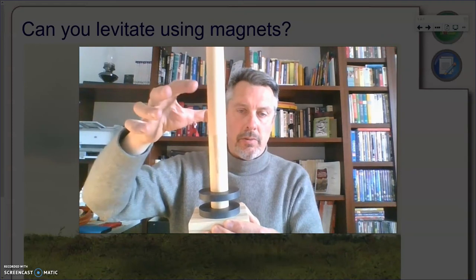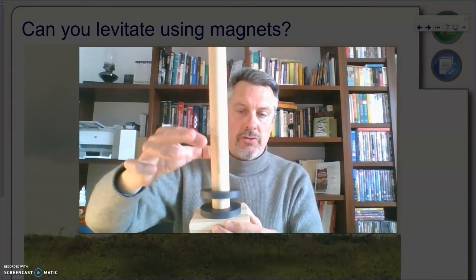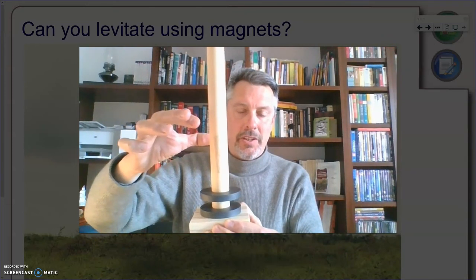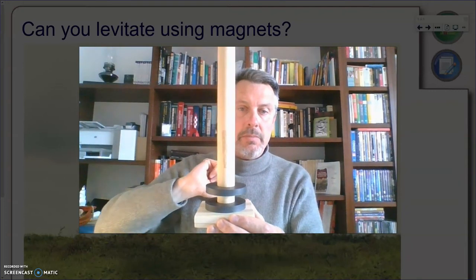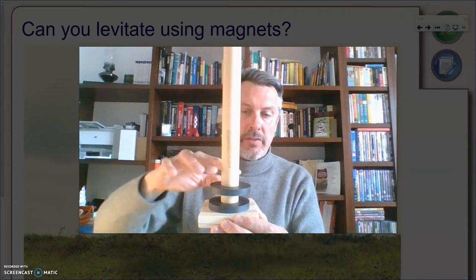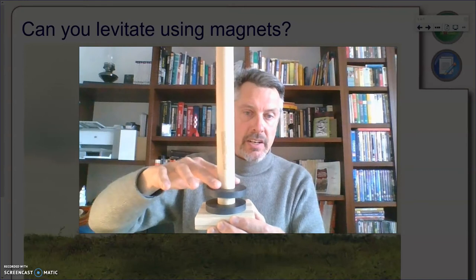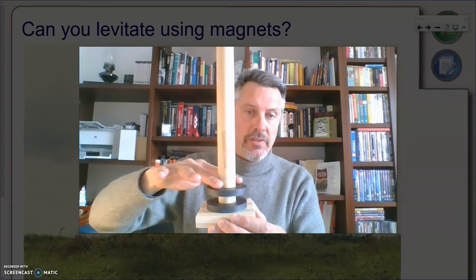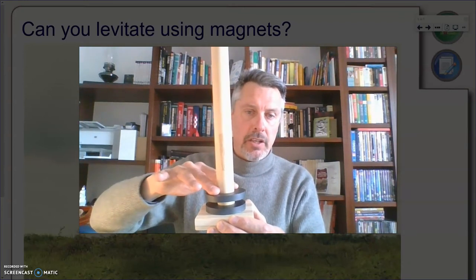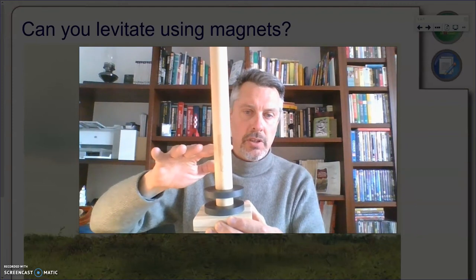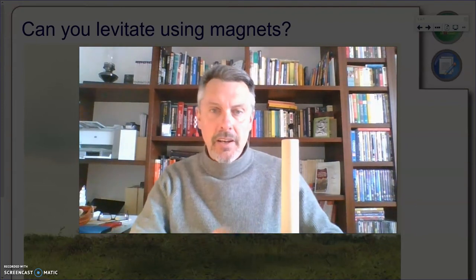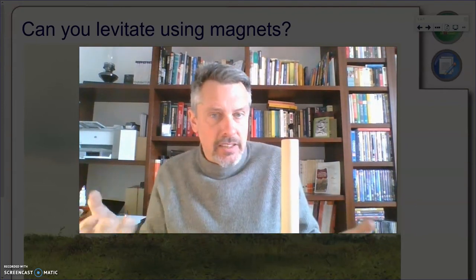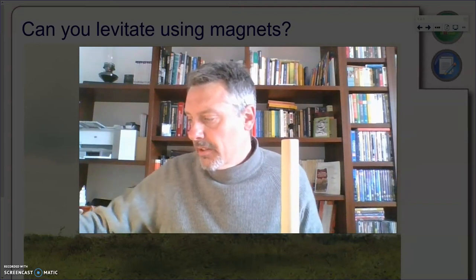And what you can see — I can drop it a little bit — you can see now these are the same poles and they're repelling each other. The net effect is that this magnet is levitating. If I push it a little bit downwards, it will go back again. But now, let's see if I add another magnet.